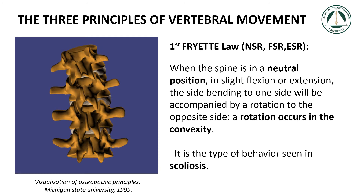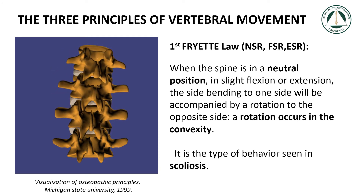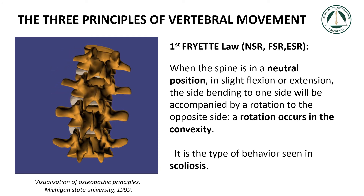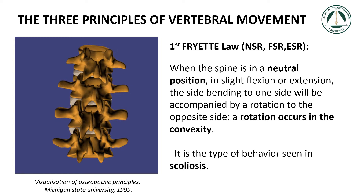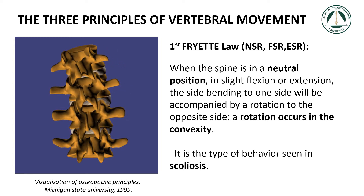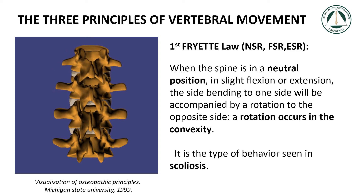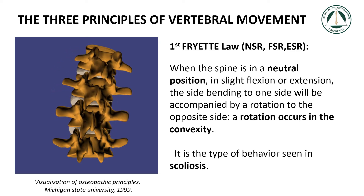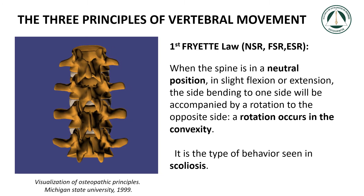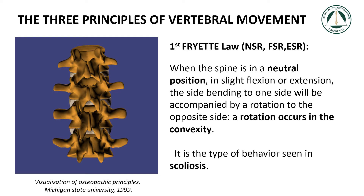First Freyette law: NSR, FSR, ESR. When the spine is in a neutral position, in slight flexion or extension, the side bending to one side will be accompanied by a rotation to the opposite side. A rotation occurs in the convexity. It is the type of behavior seen in scoliosis.